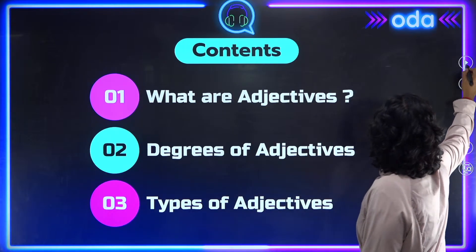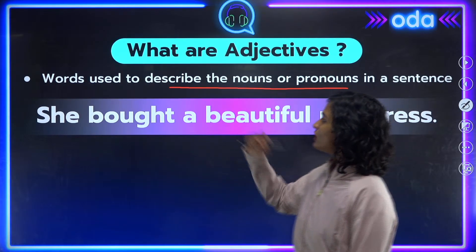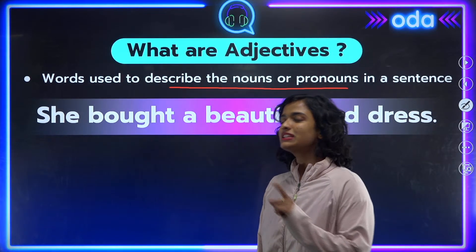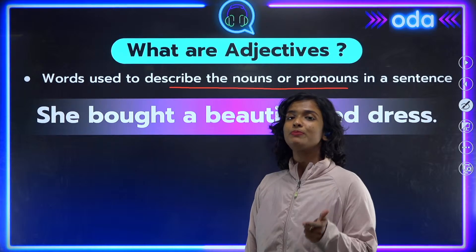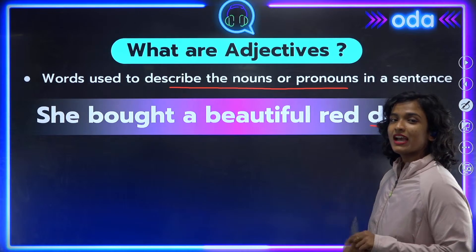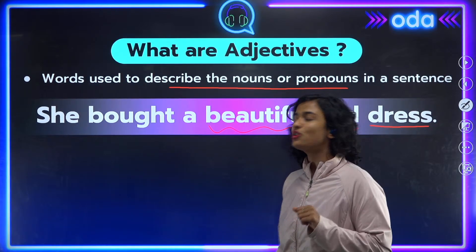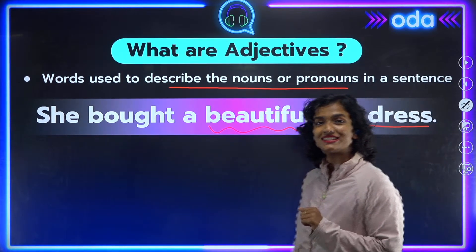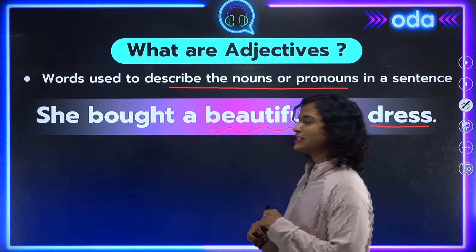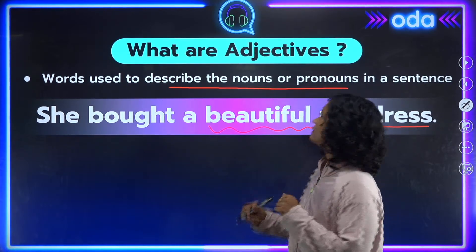For example, 'She bought a beautiful red dress.' Nouns are naming words — they may name places, people, or things. In this example, our noun is 'dress' and we have two adjectives: 'beautiful' and 'red.' Both tell us more about the noun. Let's take another example: 'I have a blue phone cover' — here, 'blue' is the adjective telling us more about the noun 'phone cover.'